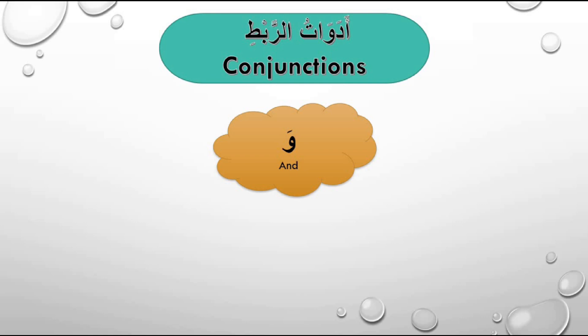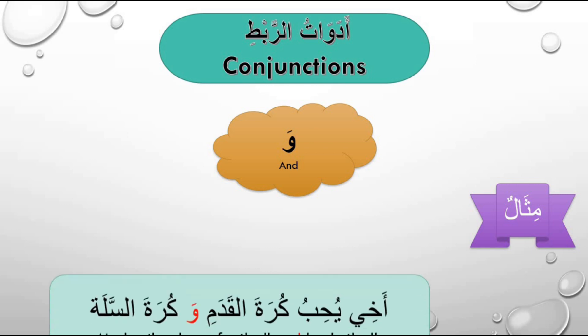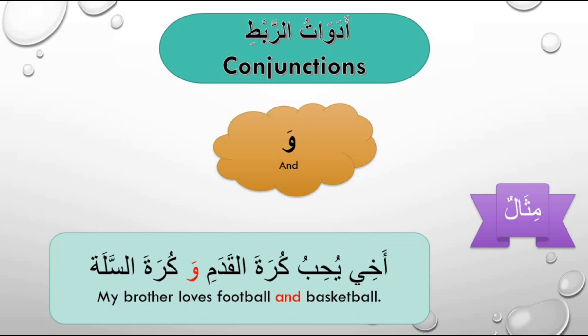وَ (waa) — meaning 'and.' مثال (Example): أخي يحب كرة القدم وكرة السلة — My brother likes football and basketball.